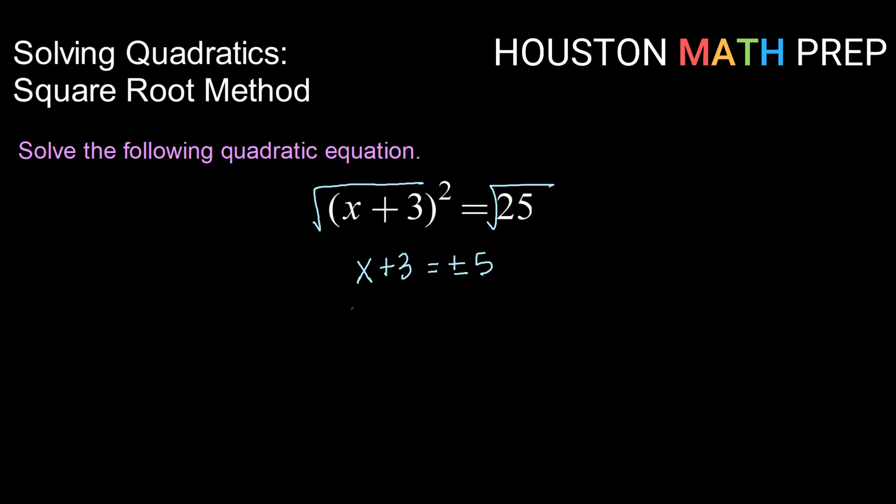Now I need to isolate my x but I have this plus or minus 5. So I'm going to go ahead and split this up and solve them separately. I'm going to have x plus 3 equals positive 5 and x plus 3 equals negative 5.